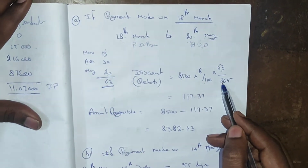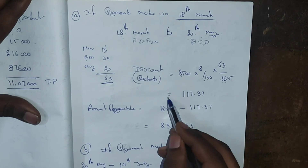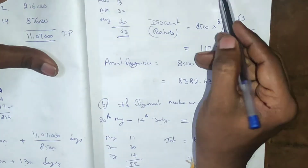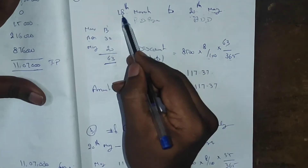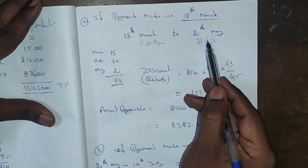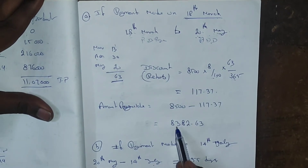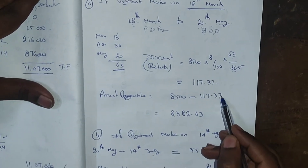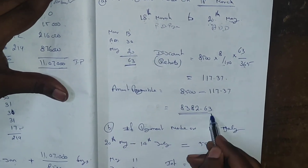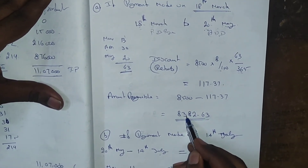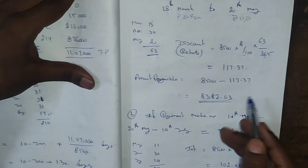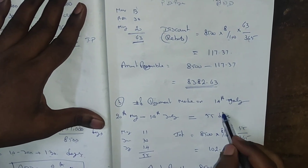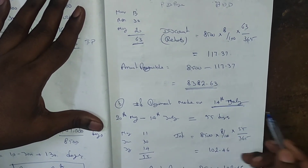Discount = 8500 × 8% × 63 ÷ 365 = ₹117.37. Since you are paying earlier than the Average Due Date, you deduct the discount: 8500 − 117.37 = ₹8,382.63. So you only need to pay ₹8,382.63 under option A.